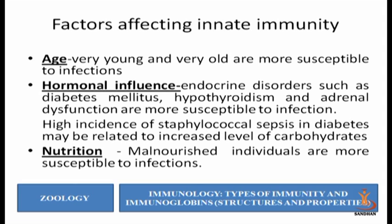The factors affecting innate immunity are age, hormonal influence, and nutrition. Very young and very old individuals are more susceptible to infections. Hormonal influence: persons with diabetes, hypothyroidism, or adrenal dysfunction are more susceptible. Nutrition: malnourished individuals are more susceptible to infection. If you are young, your hormones are well balanced, and if your nutritional status is positive, then naturally you are protected from all types of infections.